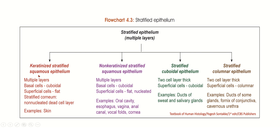Keratinized stratified squamous epithelium has multiple layers of cells; basal cells are cuboidal and superficial cells are flat. The stratum corneum — a non-nucleated dead cell layer — is present. Example: skin. Non-keratinized stratified squamous epithelium also has multiple layers; basal cells are cuboidal and superficial cells are flattened but nucleated, with no keratin layer. Examples: oral cavity, esophagus, vagina, anal canal, conjunctiva, and cornea.